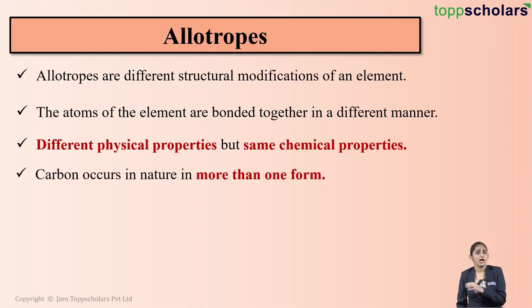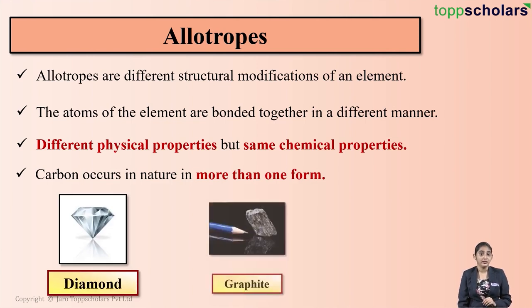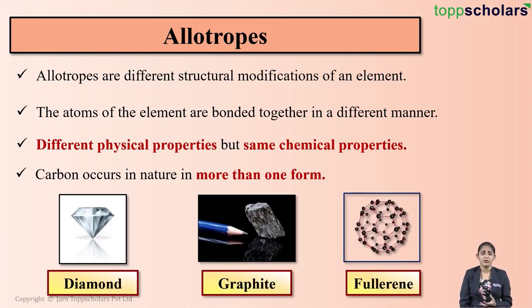Now, if we talk about carbon, carbon also occurs in nature in more than one form. In other words, we can say carbon also exhibits the property of allotropy. For example, carbon exists in nature in the form of diamond as well as graphite and also fullerene.